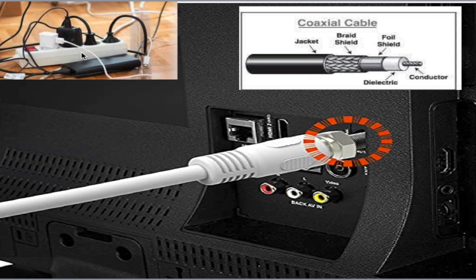Whenever alternating current — which is what we get from our power sources in the wall, 120 volts, 60 hertz, that's an AC current — whenever that travels through a cable, it produces an electromagnetic field on the outside of that cable.